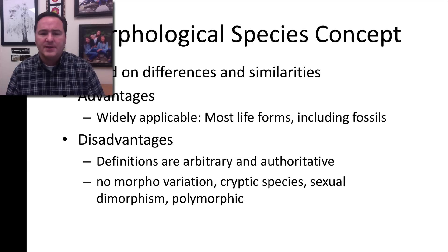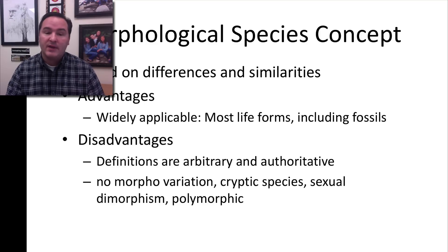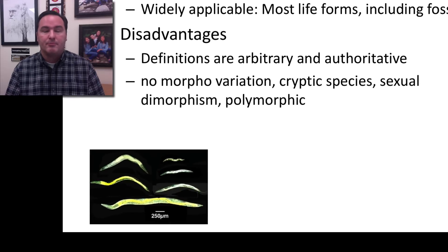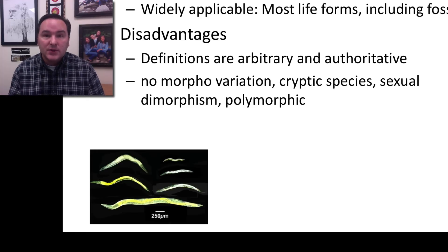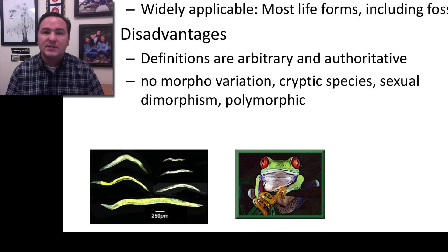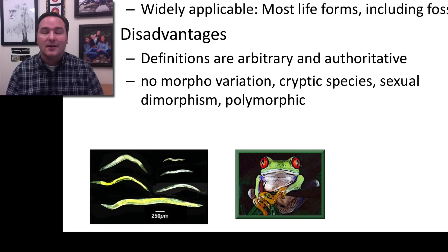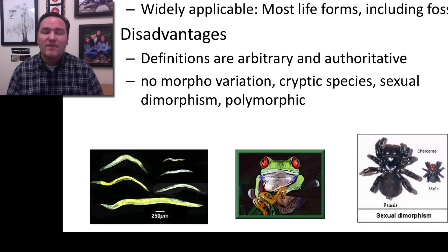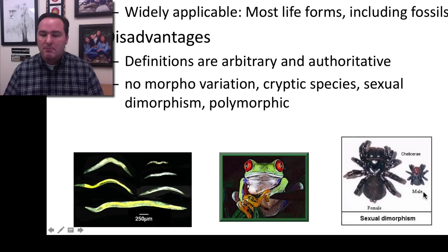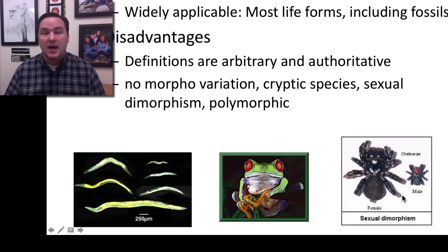The disadvantages are that definitions tend to be arbitrary and authoritative. Sometimes organisms have no morphological variation — for example, nematodes are essentially a tube with a mouth and an anus, so there's not much morphology to differentiate species. Species can also be cryptic and hard to find, like this frog. Sexual dimorphisms are another issue: in some spider species the male is much smaller than the female, so seeing both side by side without knowing their sex, you might incorrectly call them two different species.